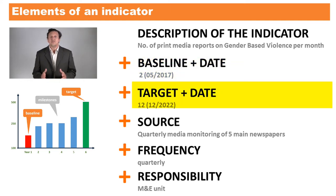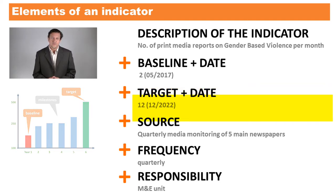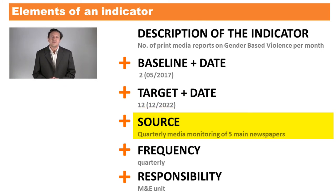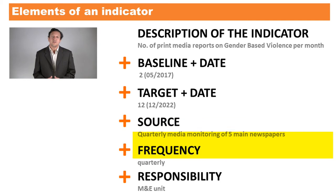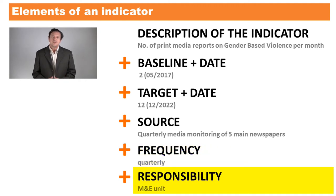Further, there is an indicator target — the desired status of the indicator at a defined time in the future. The source describes where the data for the indicator is coming from, and is sometimes also called means of verification. The frequency defines how often the status of the indicator is updated over time. And responsibility refers to who is in charge of collecting the indicator data — if it is primary data — or who will retrieve the data in the case of secondary data.